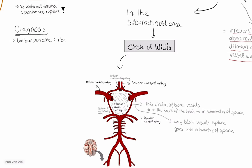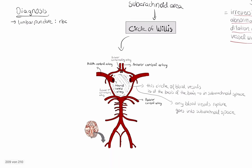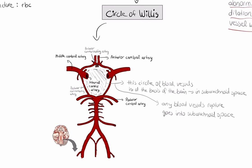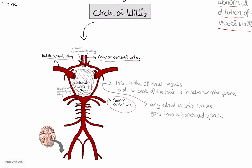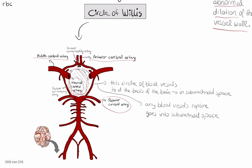This is not my drawing — I'm going to post the source of this picture. What we have here is the anterior cerebral artery, middle cerebral artery, internal carotid artery, and the posterior cerebral artery. These vessels inside make a circle, and this circle of blood vessels is at the basis of the brain.